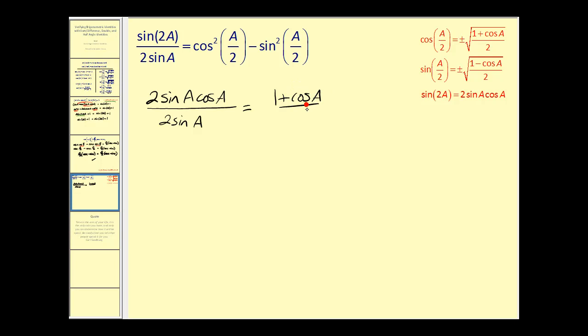Again since this is squared it's undoing that square root. Minus sine squared a over two. We'll have one minus cosine a over two.